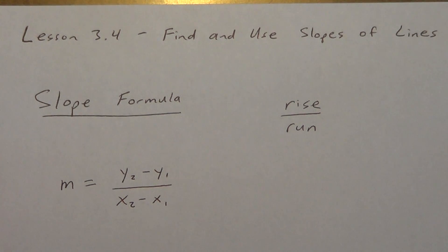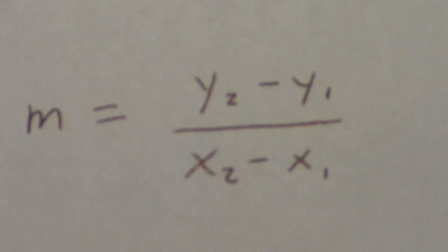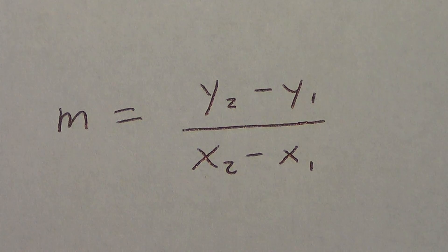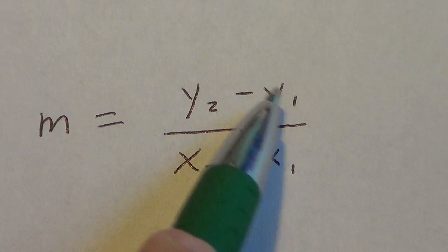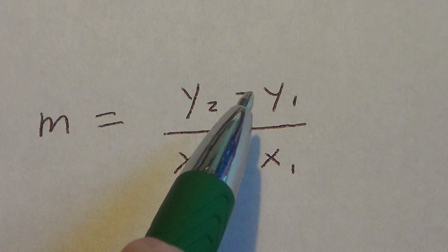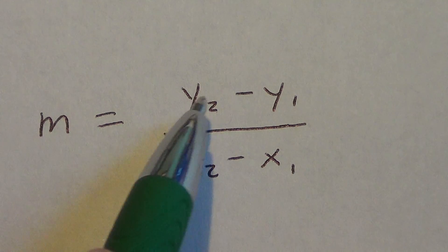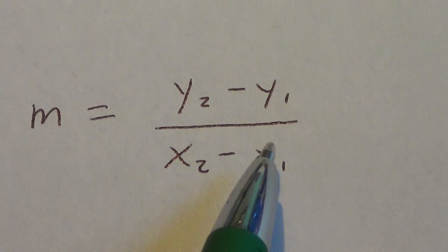A couple of things to realize: when it says y2 minus y1, that is not y squared. The two is not up above as a power — it means the second y value minus the first y value, and x2 minus x1 means the second x value minus the first x value. Y goes up and down on the coordinate plane, which is why we call it rise, and x goes left and right, which is the run.